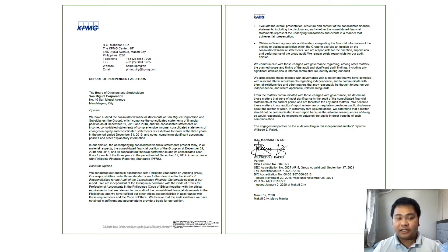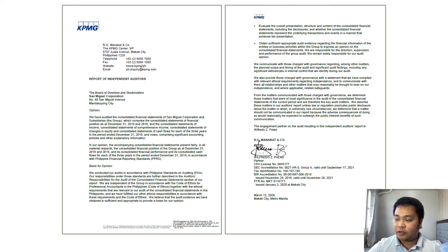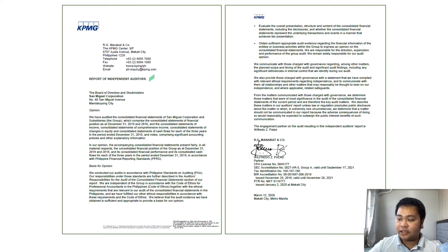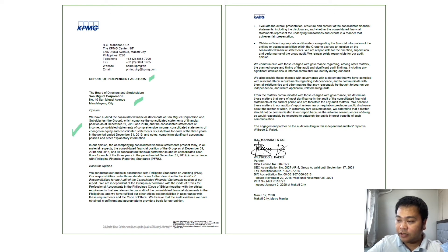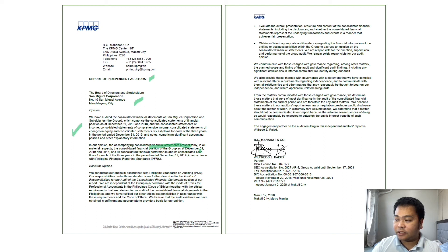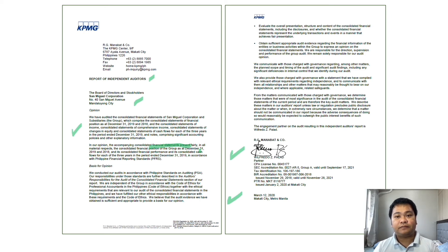As an example, here is an auditor's report issued by one of the auditing firms in the Philippines — KPMG. It comprises different parts starting from the title — 'Report of Independent Auditors' — followed by the address, and then the opinion section, which in this case is an unqualified opinion. The financial statements 'present fairly in all material respects.' There is also the signature of the auditor and the date of the auditor's report. We will discuss the specific parts of this audit report in a future lesson.